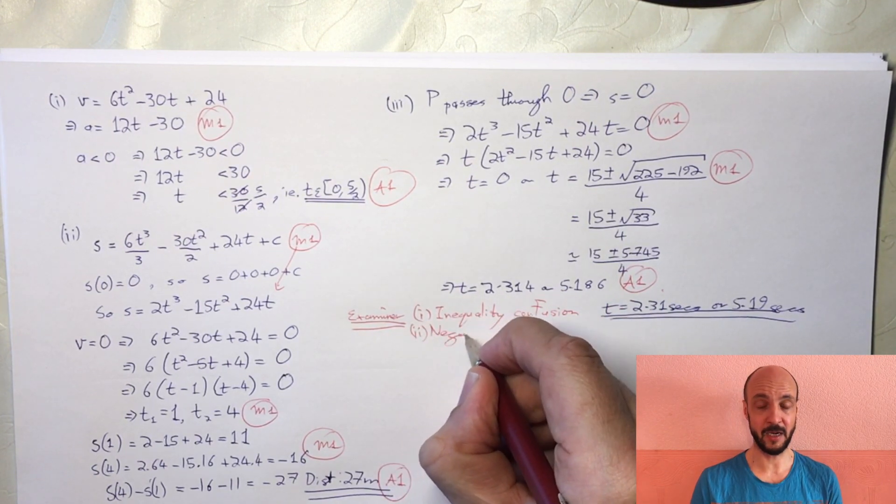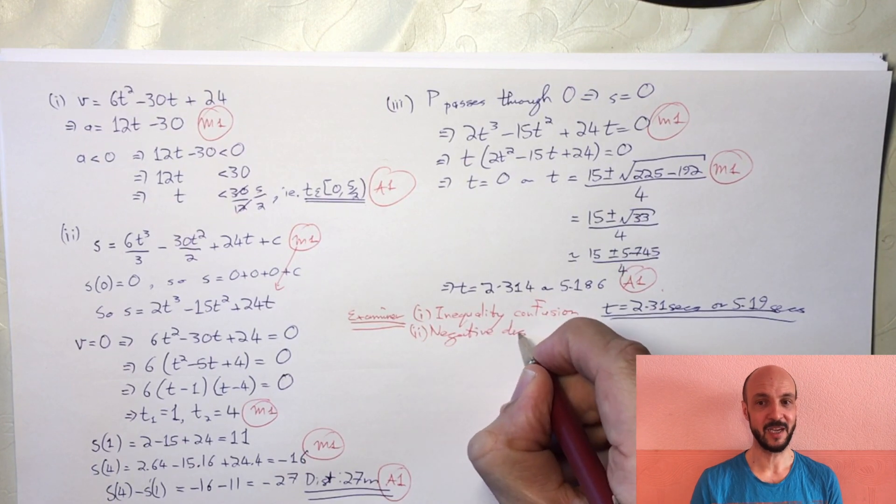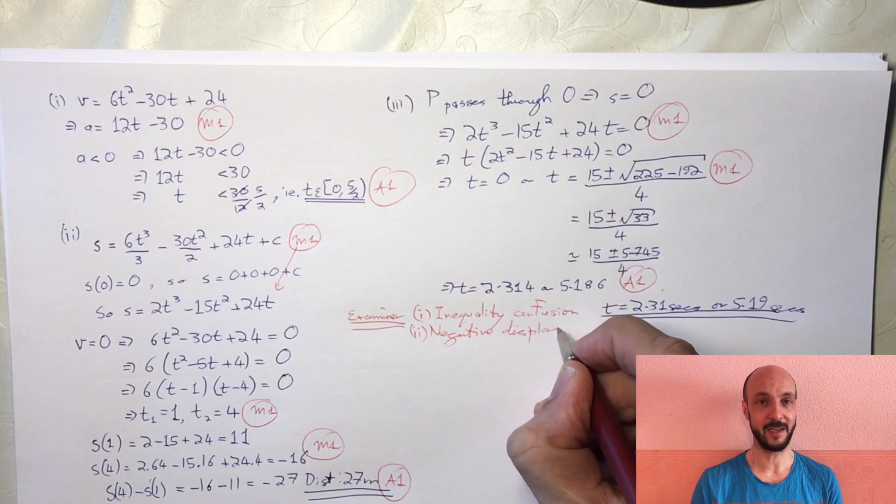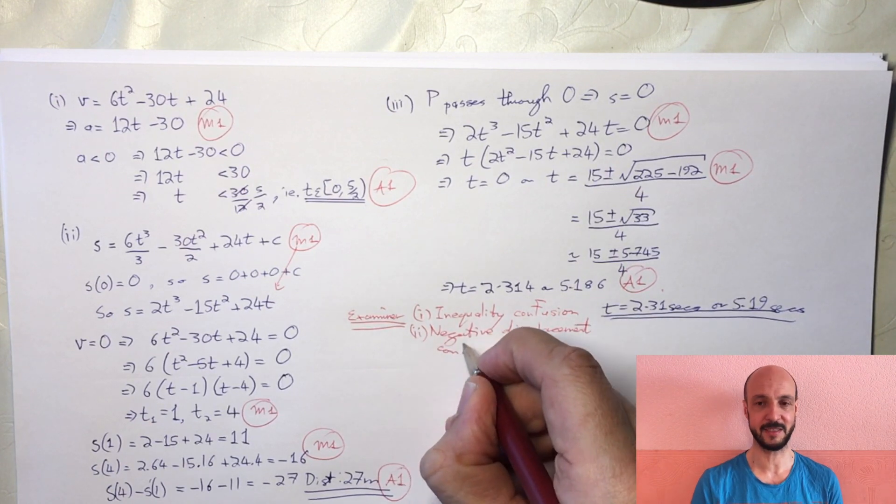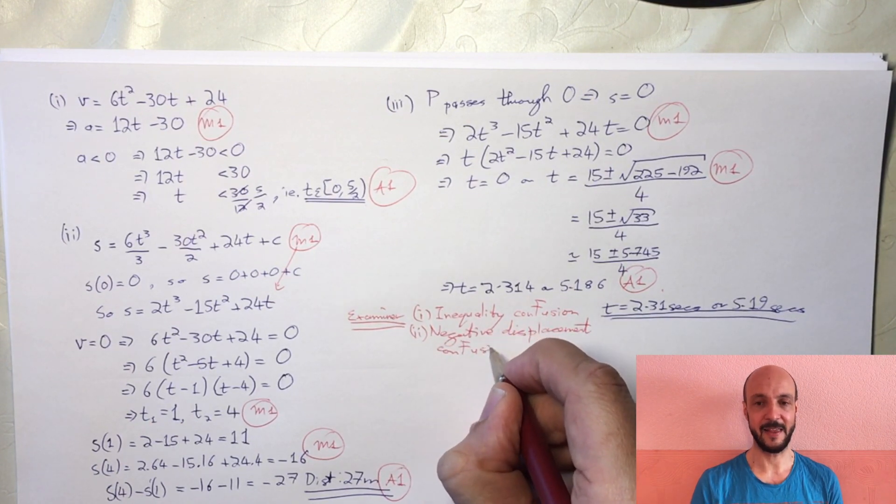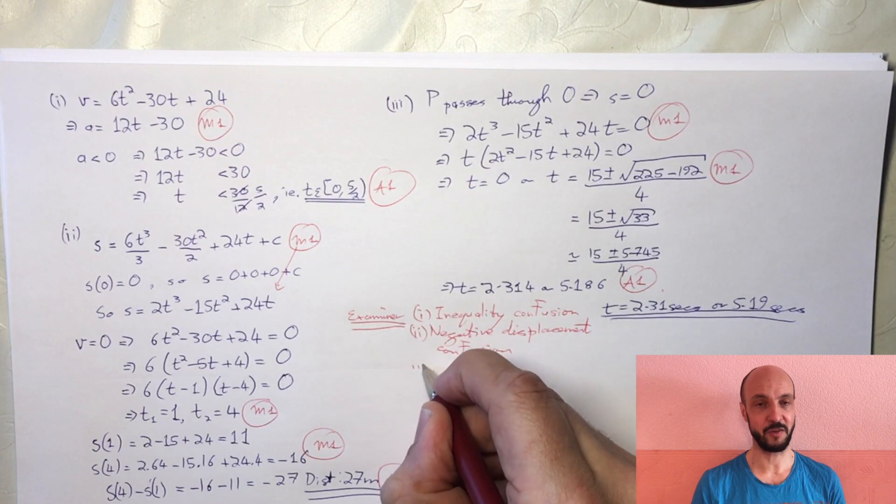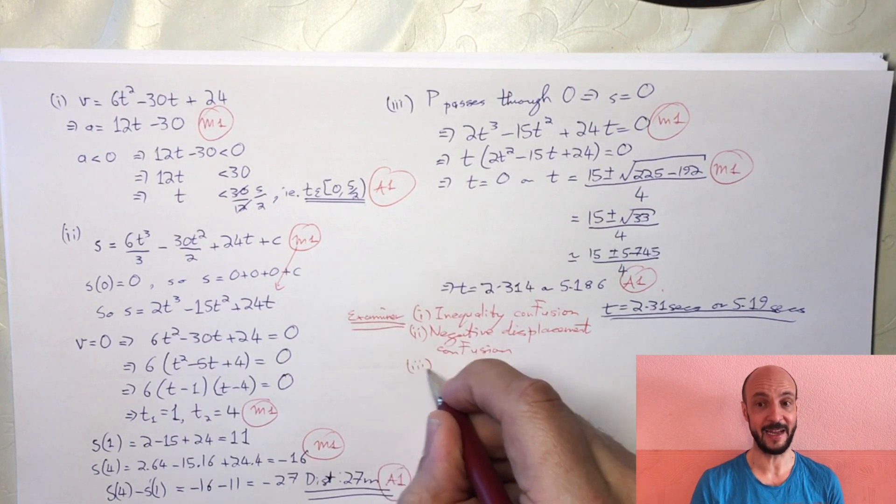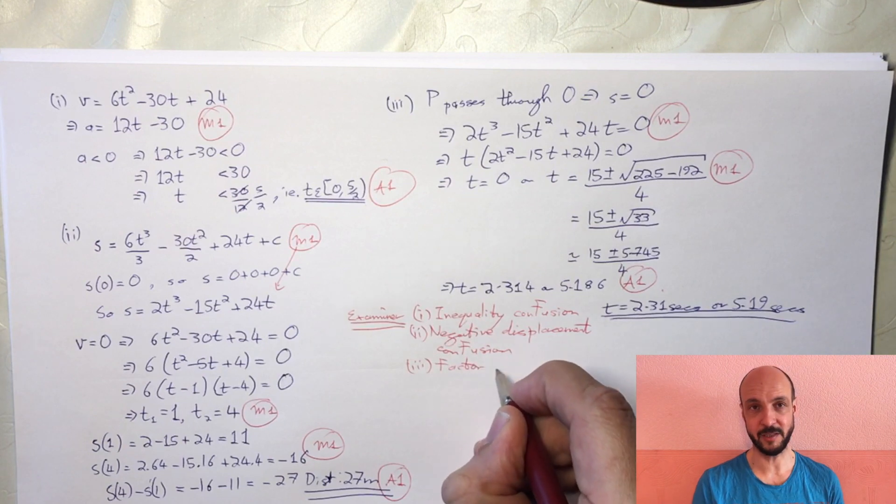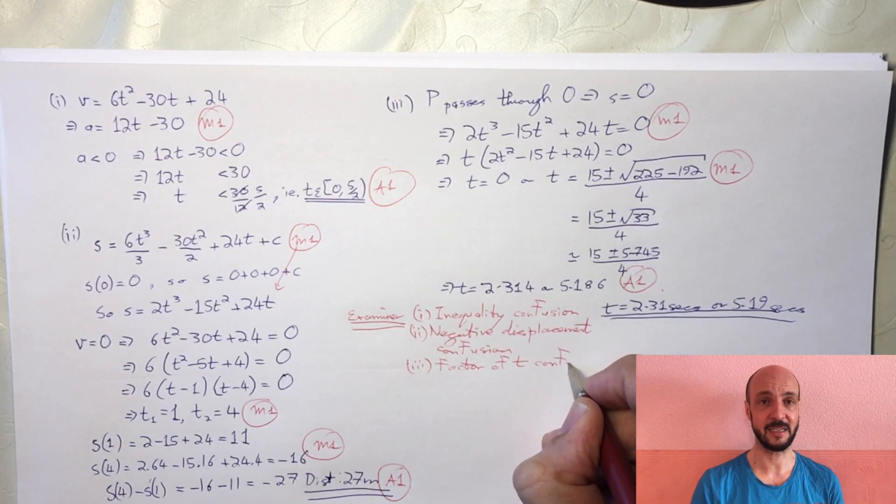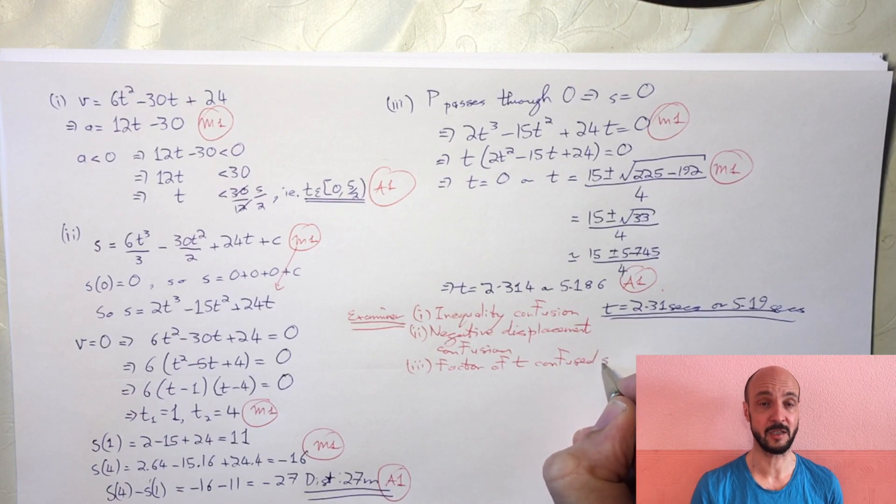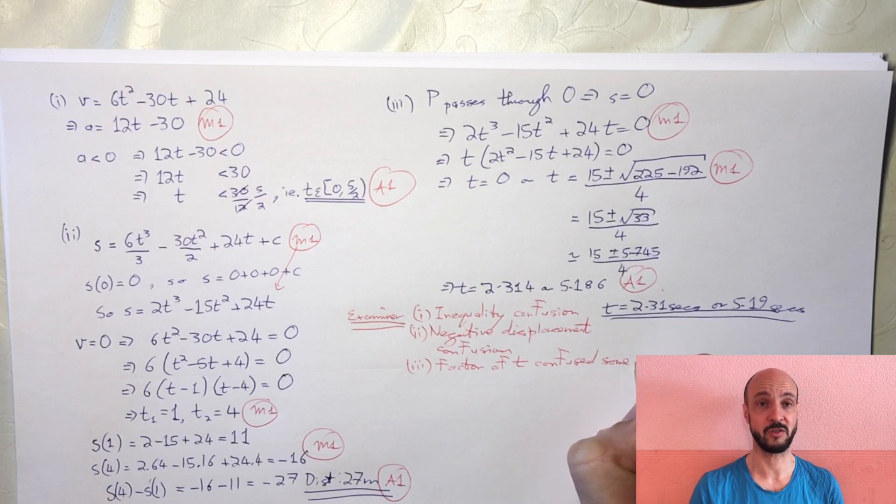In part 2, some were confused by negative displacement and took the difference incorrectly. In part 3, some didn't know how to solve the cubic. Since every term had t, you factor it out and solve the resulting quadratic using the quadratic formula.